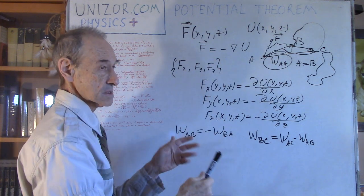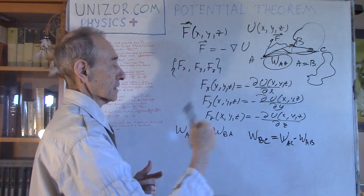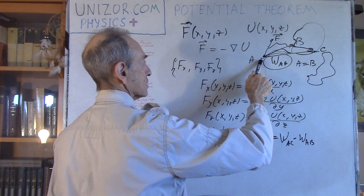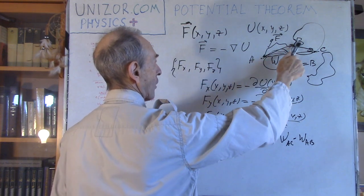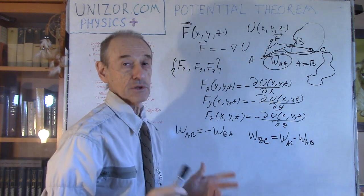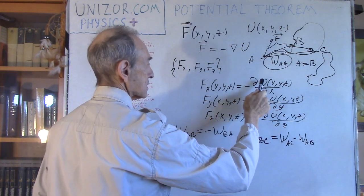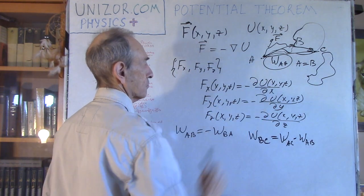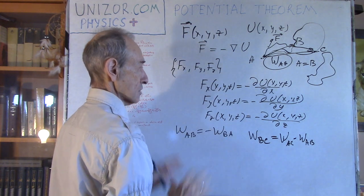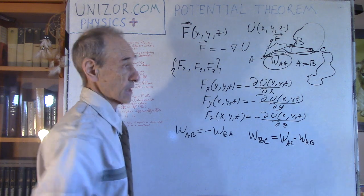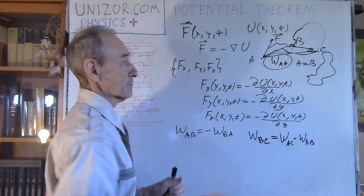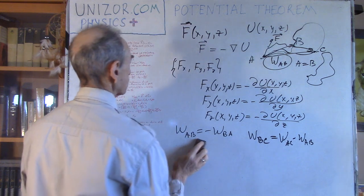Based on all of this, I will prove the converse theorem: if the field has the property that the amount of work between two points is independent of the path, then there exists a potential function U with those properties. The proof is actually very simple, so let me start.